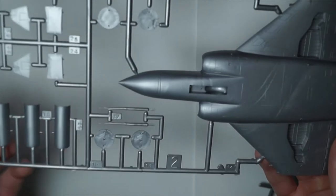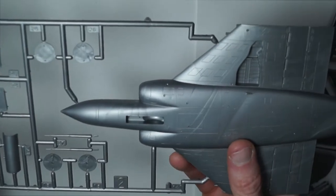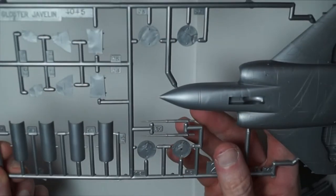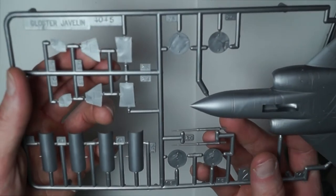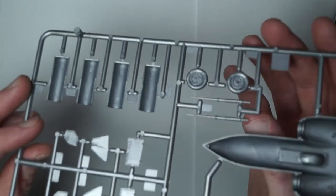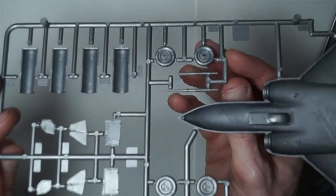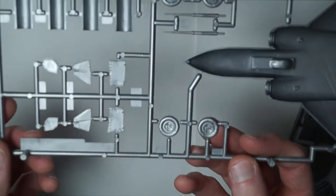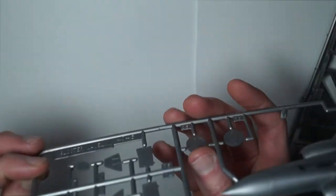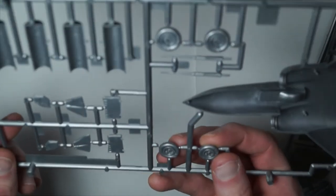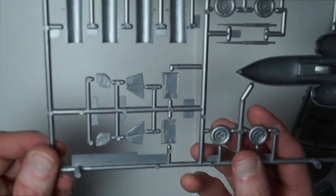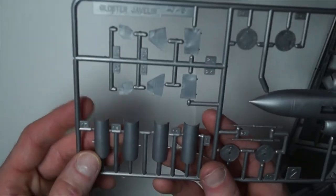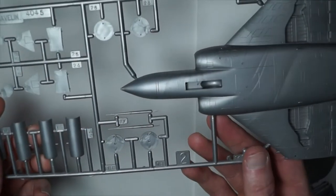Sprue two is the lower fuselage half, gear doors and the wheels are in two halves so we will be buying some aftermarket resin as they look horrible to me. I think they are exhaust parts, I believe, there.